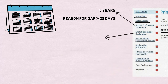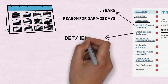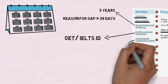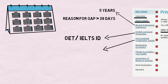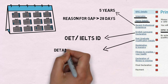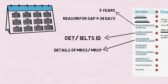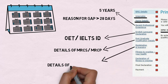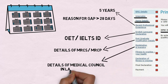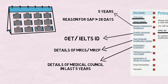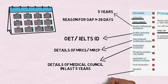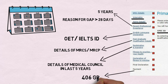After that, you have to give an English language declaration, so you have to provide your OET or IELTS ID. The next section is based on registration and licensing — you have to give details of registration in any medical council in which you have been registered in the past five years. Once you are done with all these, you have to make a payment of 406 pounds.